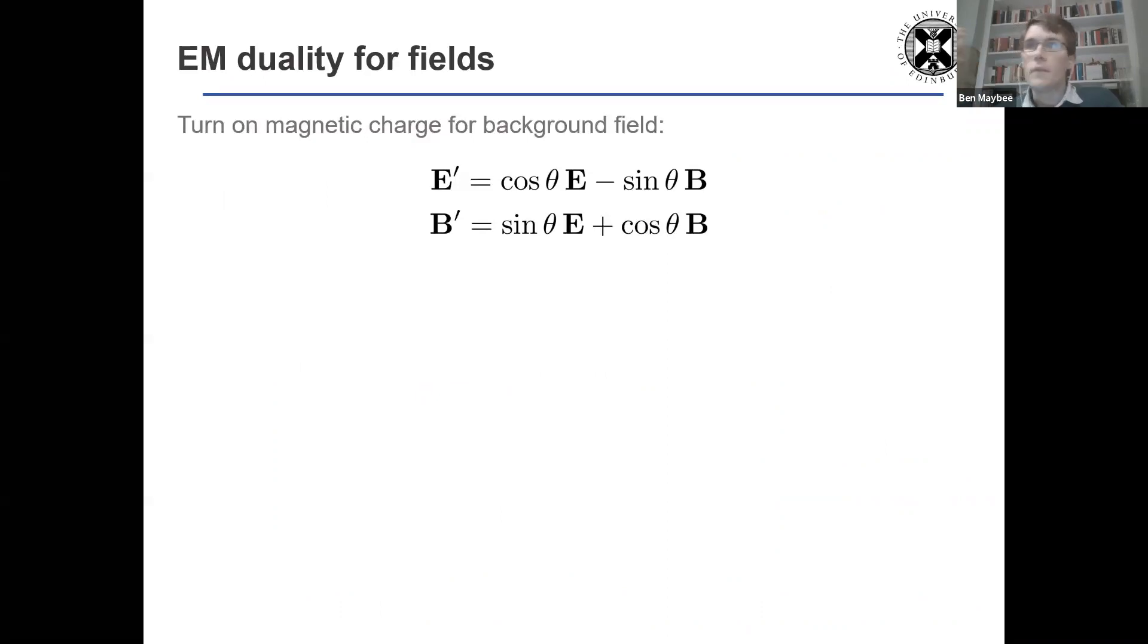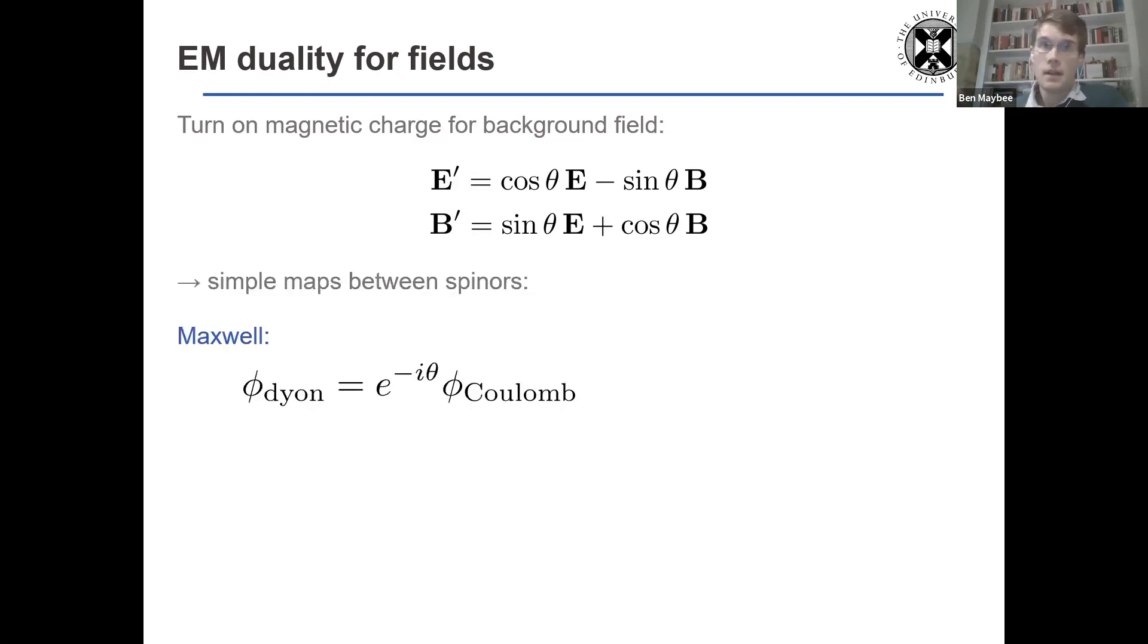But rather than just do the same calculations for Kerr, let's introduce another ingredient to the recipe and turn on some magnetic charges and use relations for electromagnetic duality. So this, of course, rotates the electric and magnetic fields for an electromagnetic background, but it translates into very nice simple maps between spinors.